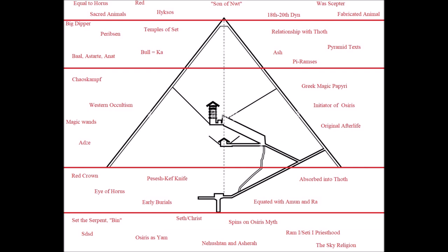The was scepter is simply a staff held by kings and gods alike. It represented the power and dominion of Setesh and was based off his forked tail and his fabricated animal head. 18th to 20th dynasty—this just refers to the fact that starting with Horemheb at the end of the 18th dynasty, and then especially the 19th dynasty with Seti and Ramesses, Setesh was very highly honored. It was probably the most flourishing time for his worship.